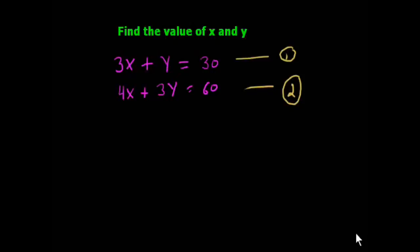Hello friends, today we will teach you how to find the value of x and y when we have two equations. First equation is 3x plus y equals 30. Second equation is 4x plus 3y equals 60. We will see how to make a common 3x and how to make common 4x.